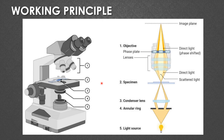Regarding the working principle, the phase contrast microscope contains the parts: the eyepiece or ocular lens, the objective, the specimen, the condenser lens, the annular ring or annular diaphragm, and the light source. The majorly used light source for the phase contrast microscope is the tungsten halogen lamp. The appearance looks like an ordinary light microscope, but the phase contrast microscope contains two special parts. One is the annular ring or annular diaphragm, which is present below the condenser lens.